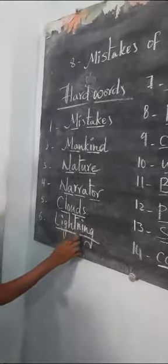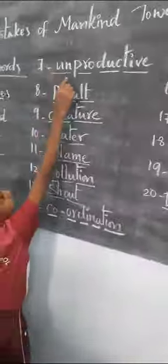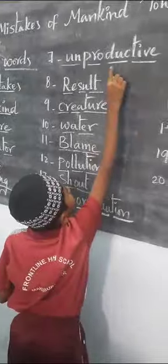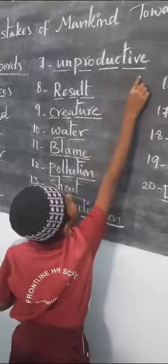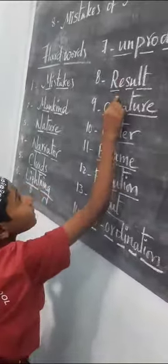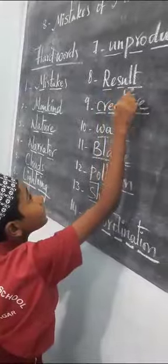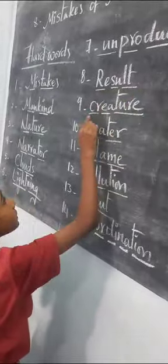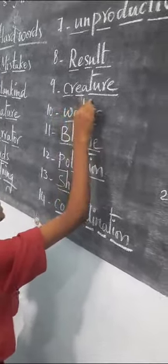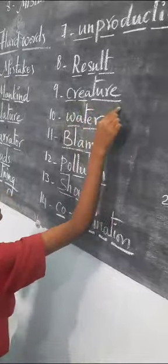Good morning everyone, my name is Namo Dattu. I am studying in the school class. My study is Outland High School. Unproductive. U-N-P-R-O-D-U-C-T-I-V-E. Unproductive. Result. R-E-S-U-L-T. Result. Creator. C-R-E-A-T-O-R. Creator.